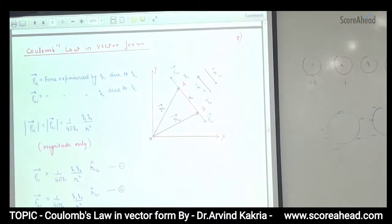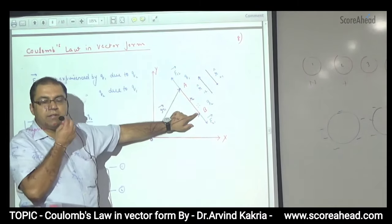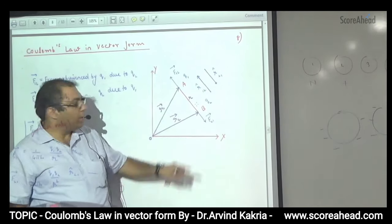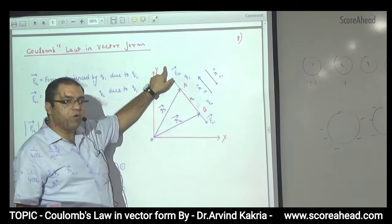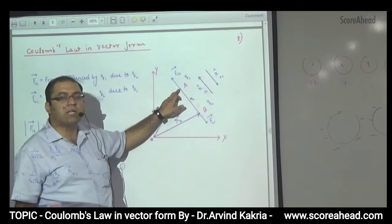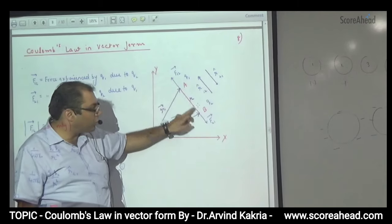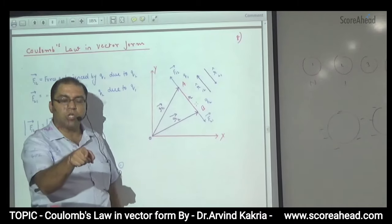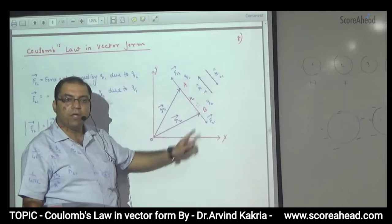Suppose there are two charges Q1 and Q2, and the distance between them is R. Remember, both are positive. Q2 repels Q1, and that force is F12. Similarly, Q1 exerts force on Q2, which is F21.